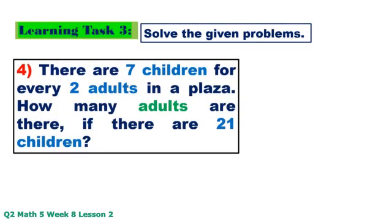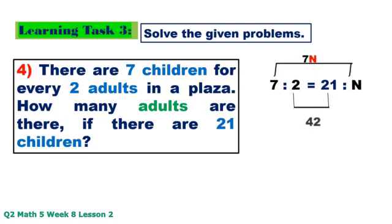Number 4: There are 7 children for every 2 adults in a plaza. How many adults are there if there are 21 children? 7 to 2 equals 21 to N. 7 times N equals 7N, 2 times 21 equals 42. 42 divided by 7 equals 6. 6 adults.